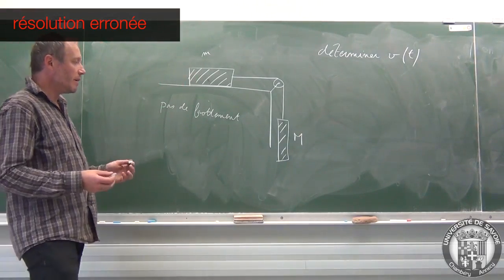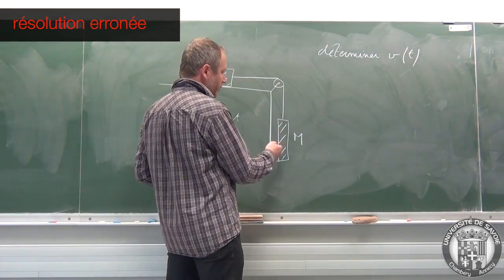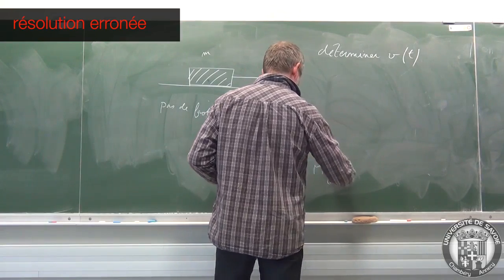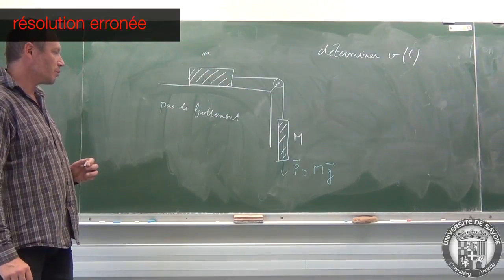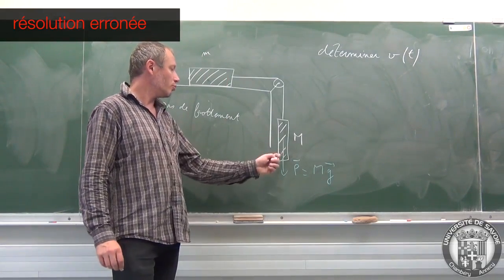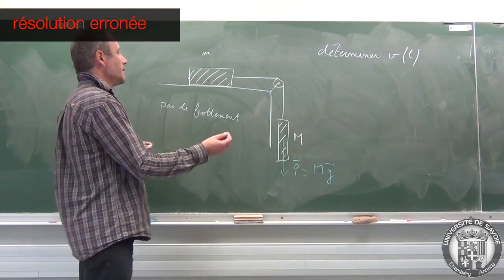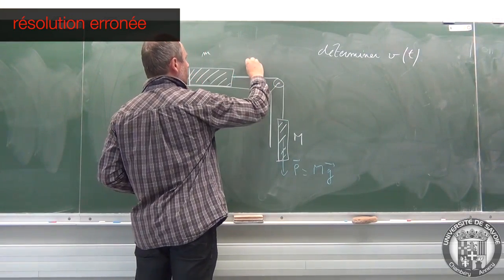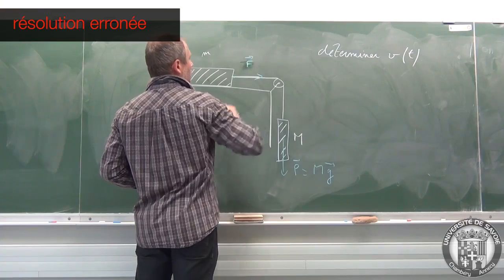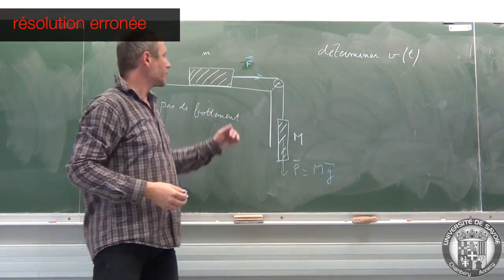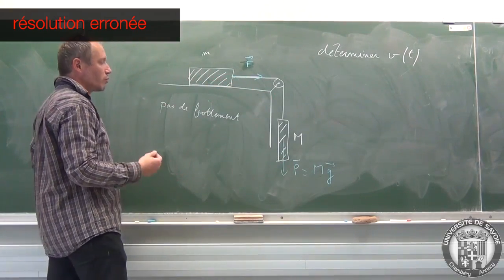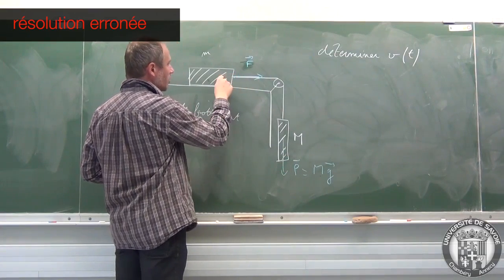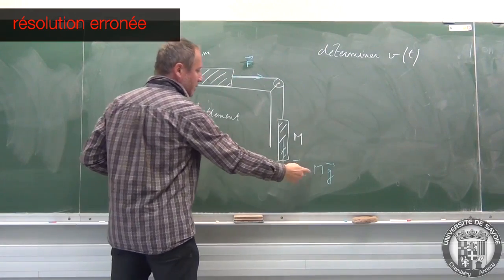Beaucoup d'étudiants confrontés à ce problème disent la chose suivante. On a ici une masse m qui est soumise à son poids vers le bas, P = mg. Le poids ici de la grosse masse, je l'appelle le contrepoids, s'écrit Mg. Cette force ici est répercutée par la poulie à cet endroit-là. Et on se retrouve ici avec une force que je vais appeler F, qui a la même norme que Mg ici, mais simplement qui a une direction différente du fait de la poulie.